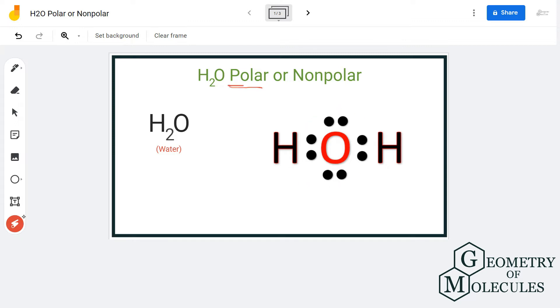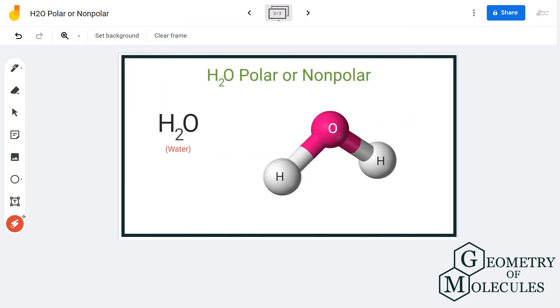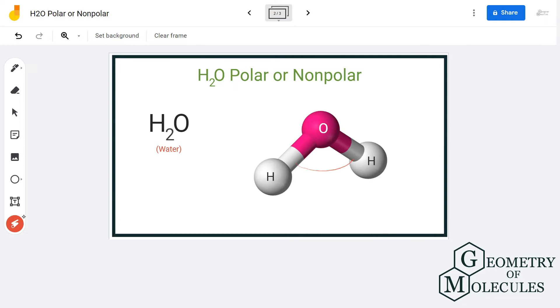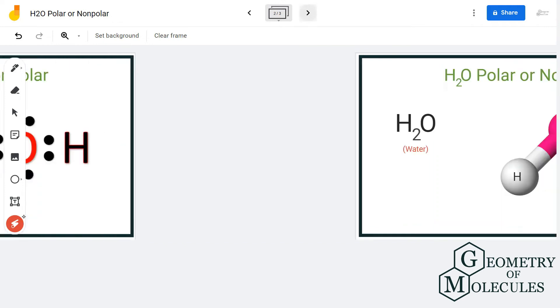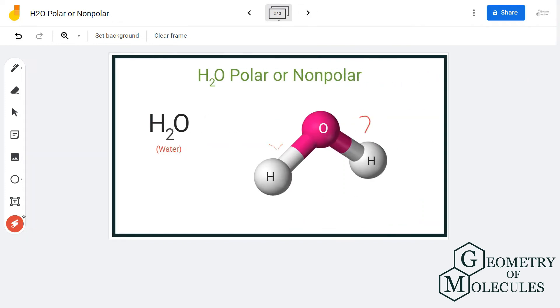To further confirm it, we will look at its shape. If you look at its shape, the shape here is bent because of these two lone pairs of electrons that are present on the oxygen atom. Due to these, hydrogen atoms are pushed down and the shape acquired by the H2O molecule is kind of bent or angular.